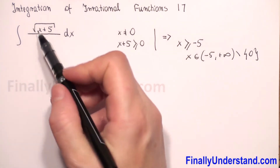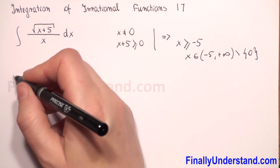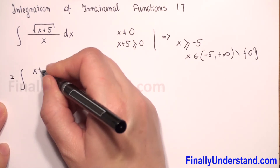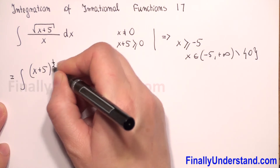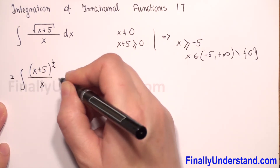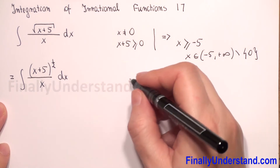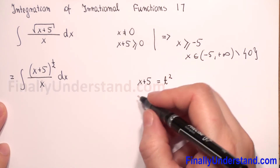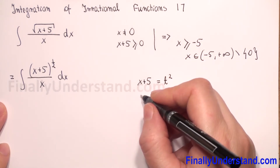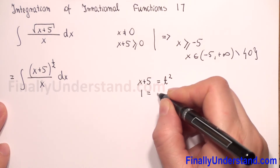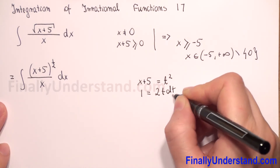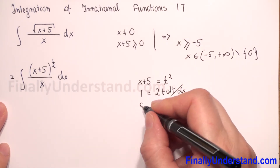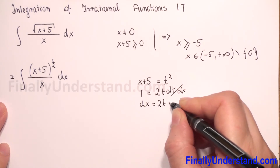Now I will rewrite our square root as a power of one half. So this is equal to the integral of x plus 5 to the power one half over x, with respect to x. Next I will substitute x plus 5 by t squared. We find the derivative of both sides with respect to x: 1 equals 2t dt/dx. Multiplying both sides by dx, we get dx equals 2t dt.